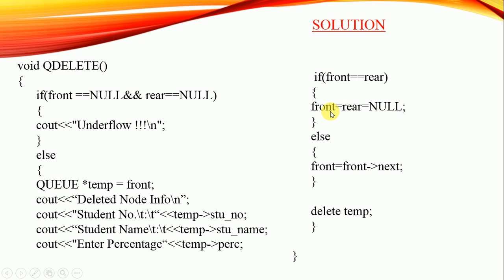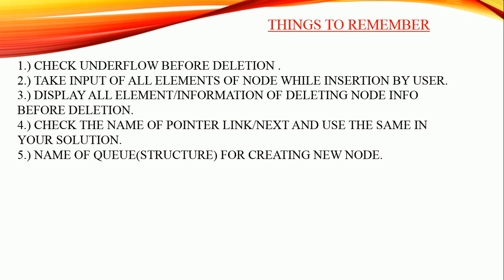In all other cases, if the queue contains more elements, shift front to the next element: front = front->next. The first element is now extracted from the list, and then you can delete the node pointed to by temp. This is how you perform the delete operation on a queue.